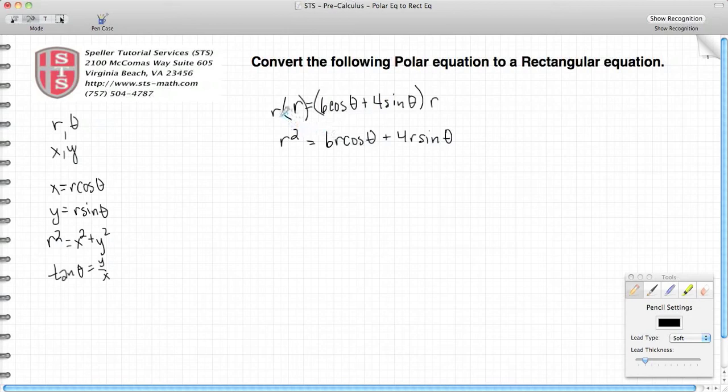Now I'll begin to make some of my substitutions. r squared, I know, is the same thing as x squared plus y squared. On the right hand side, I see an r cosine theta. I know that r cosine theta is the same thing as x, so this here becomes 6x. For this term, I see an r sine theta. That's the same thing as y, so I substitute y in for that.